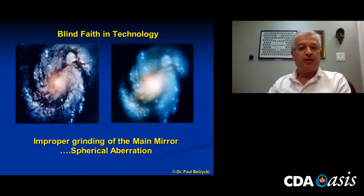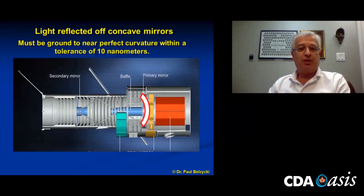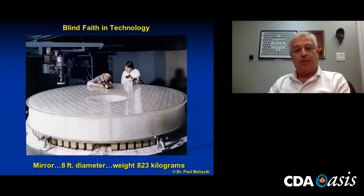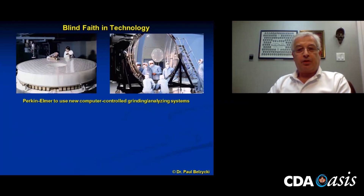At the heart of the Hubble Space Telescope is a main mirror that must be ground to near-perfect curvature within a tolerance of 10 nanometers — a fraction of the wavelength of visible light. Light from a distant star hits the main mirror, reflects to a secondary mirror, goes through a hole in the main mirror, hits the photoreceptors, and is analyzed. The mirror is ground from a slab about eight feet in diameter weighing over 800 kilograms.